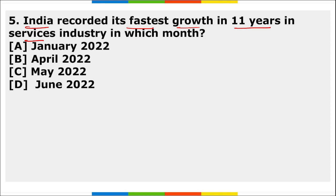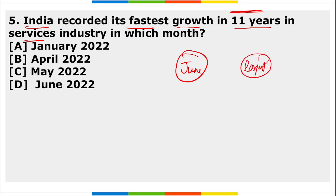Next MCQ: India recorded its fastest growth in 11 years in the services industry in the month of June. The S&P Global India Services Purchasing Managers' Index rose to 59.2 in June — the highest since April 2011. Stubborn inflation remains a concern, with price pressures rising at the sharpest rate in five years.